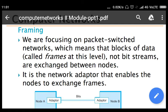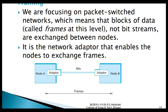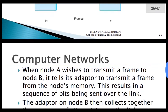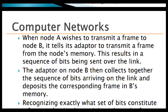Today we are going to see the next job of the data link layer. The data link layer is responsible for the creation of frames, and these frames are going to be transmitted through the physical media to move from one node to another node. Here we are not concentrating on the bit streams - we are dealing with a block of data. This block of data is encapsulated inside a particular frame, and this frame is going to be transmitted or exchanged between the nodes.